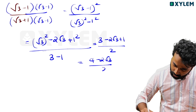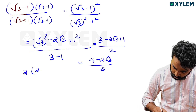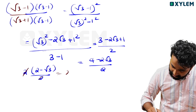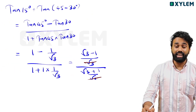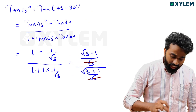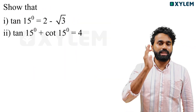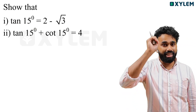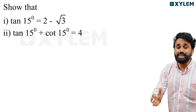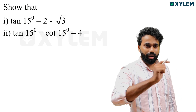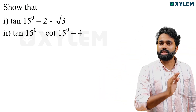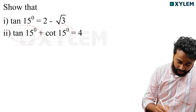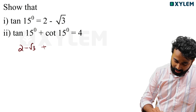Root 3 was kind of 3 minus 2 root 3 plus 1 divided by 4. 4 minus 2 root 3 divided by 2, equals 2 minus root 3. So tan 15 degrees is equal to 2 minus root 3.